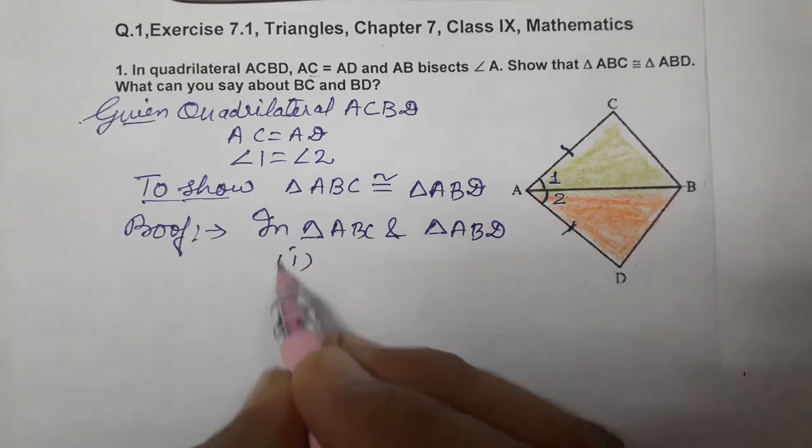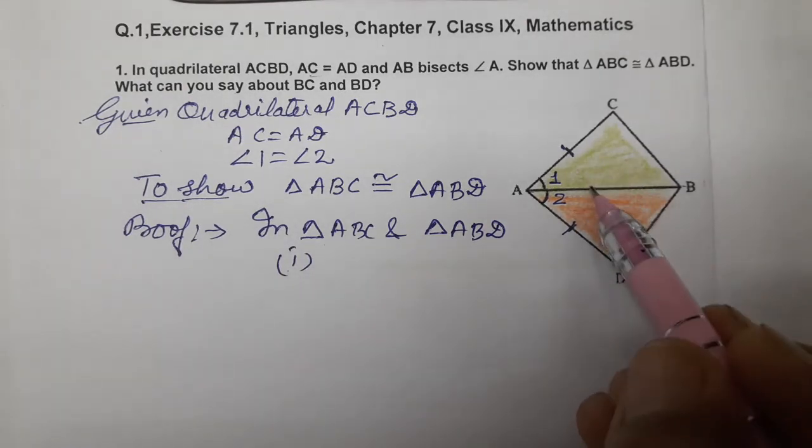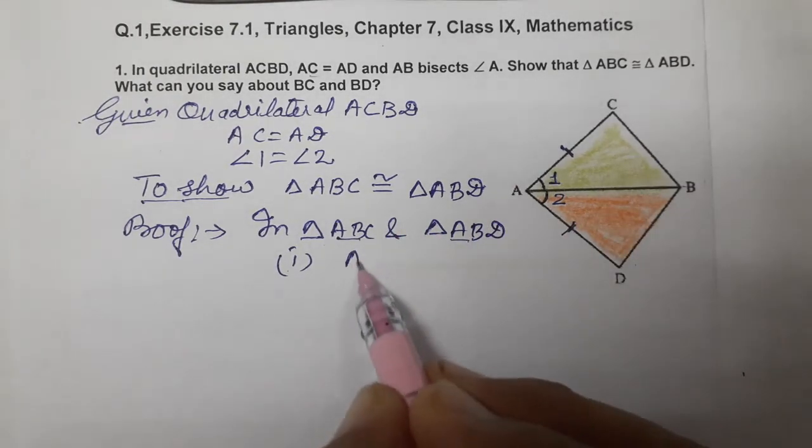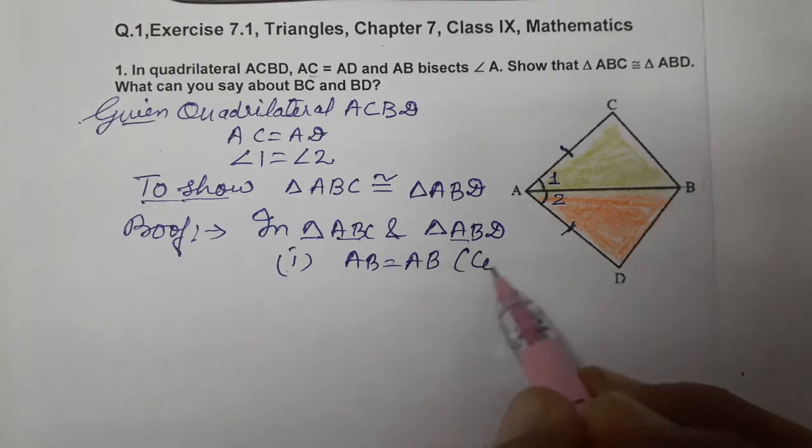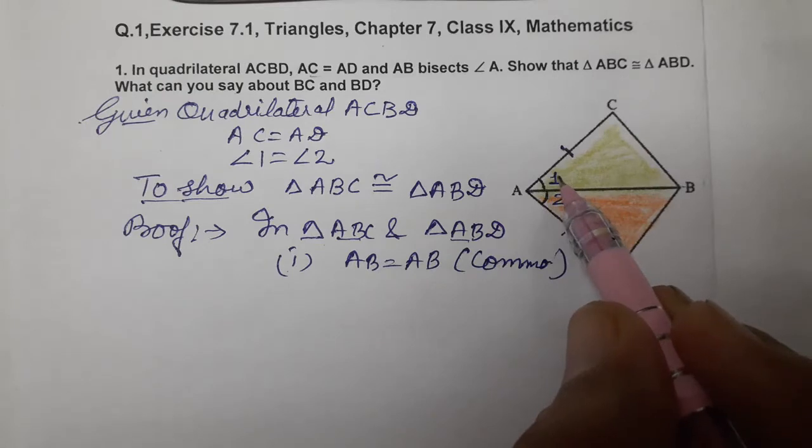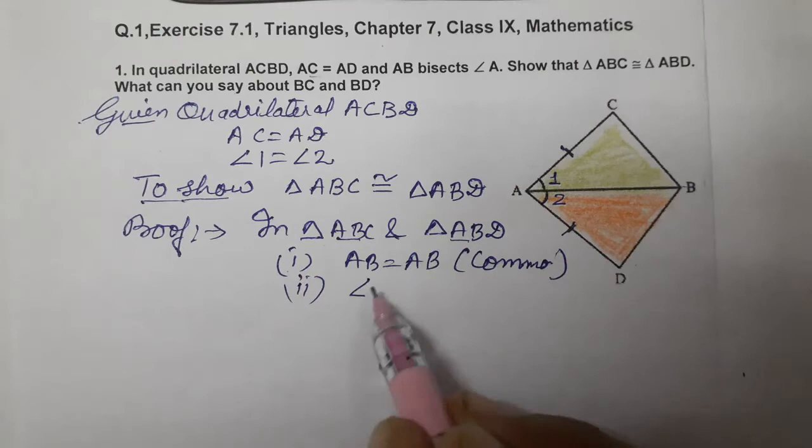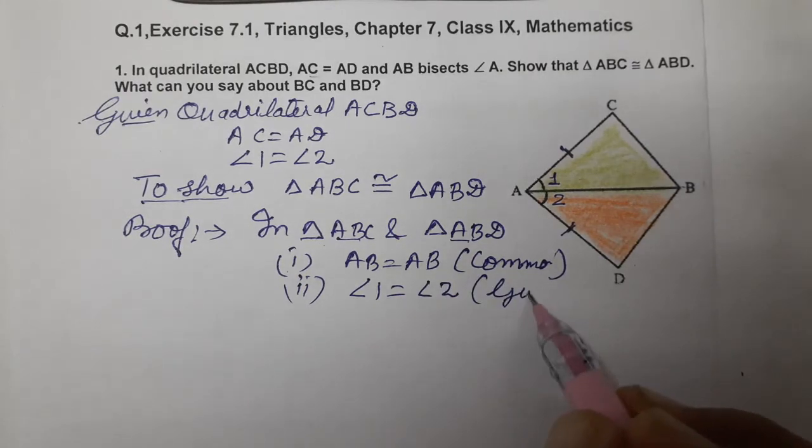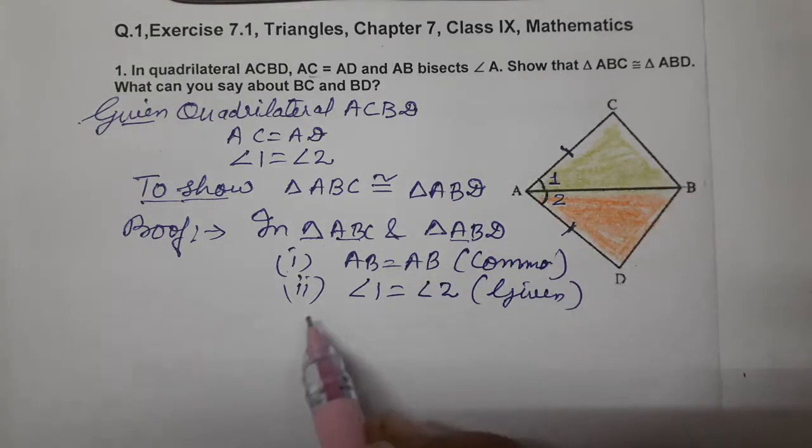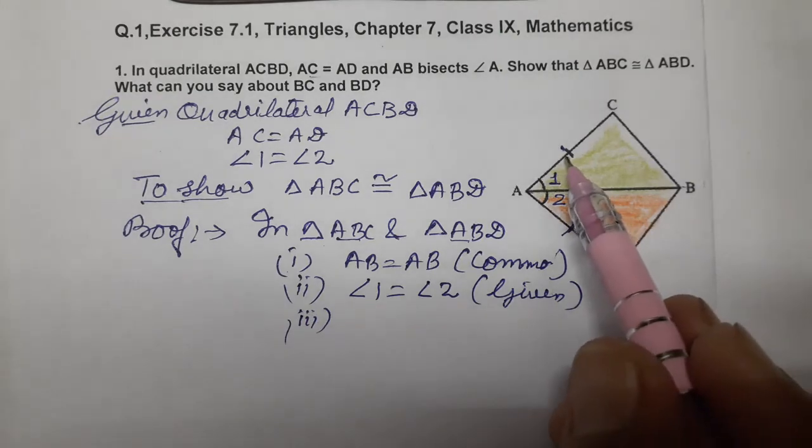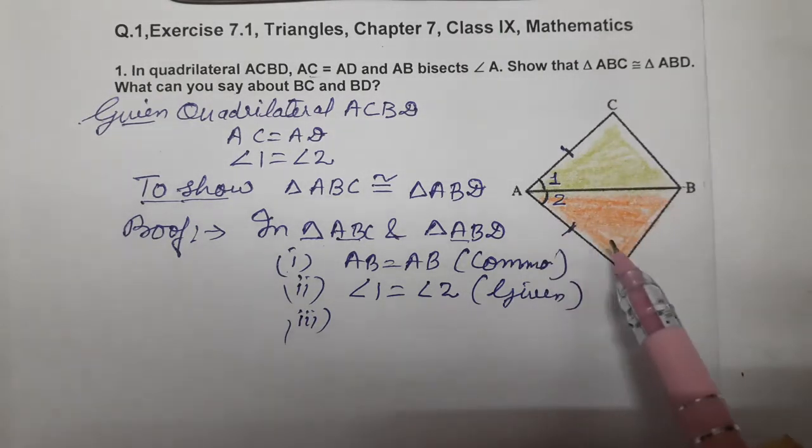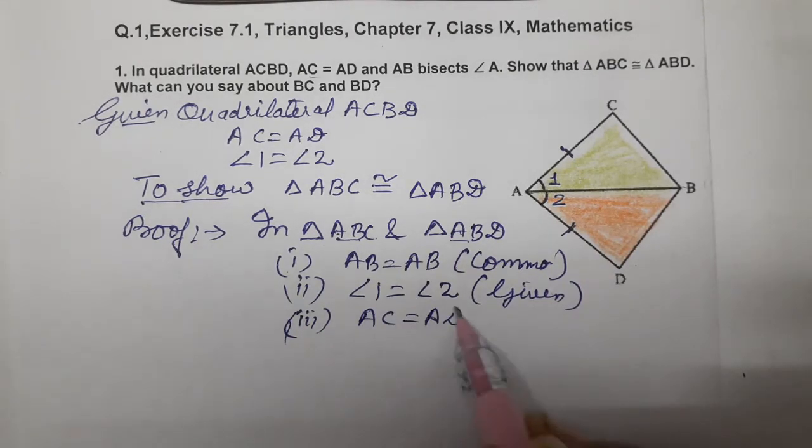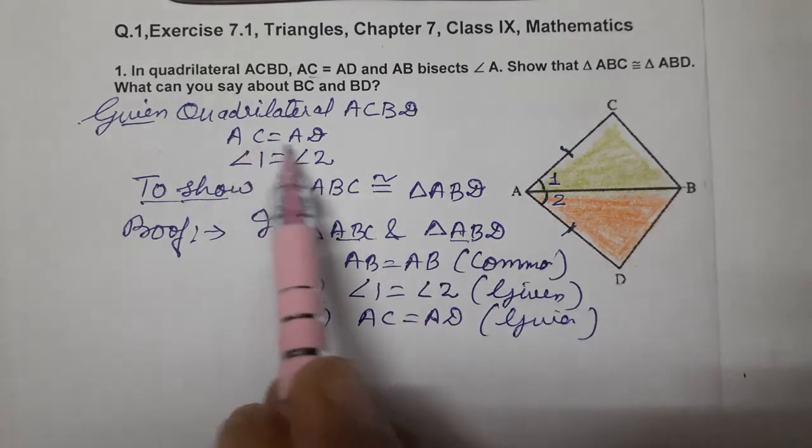What is given to us? First, AB equals AB, it's a common side. Second, the angles are equal as given. Third, AC and AD are equal. AC equals AD is given to us.